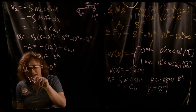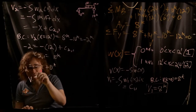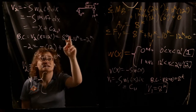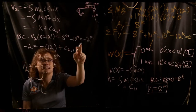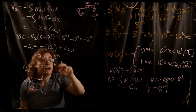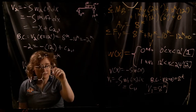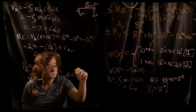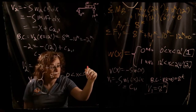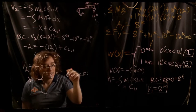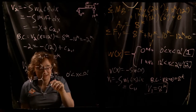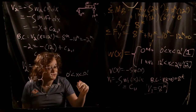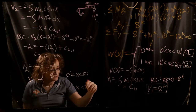So our complete shear function is: V equals 8 kips when x is between 0 and 12 feet, and V equals negative x plus 10 kips when x is between 12 and 24 feet.